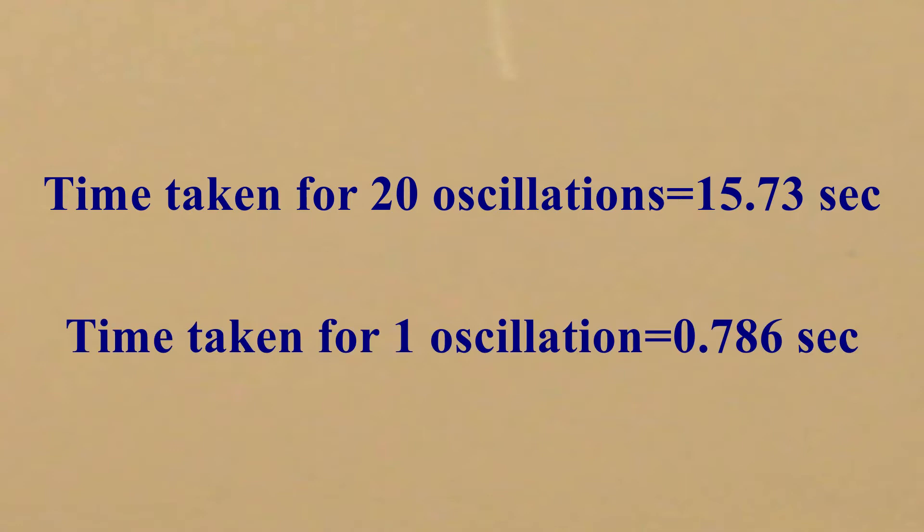From this we can calculate the time for one oscillation. The time taken for 20 oscillations is 15.73 seconds, which shows the time taken for one oscillation is roughly 0.75 seconds.